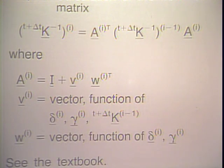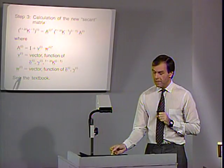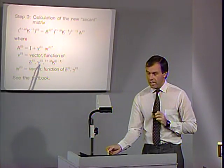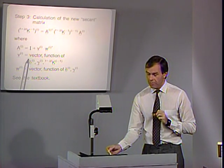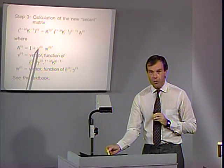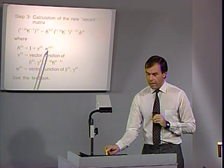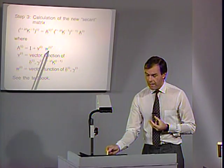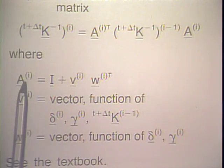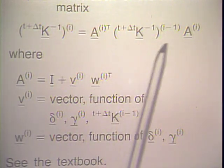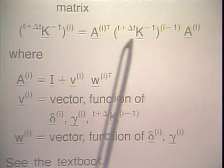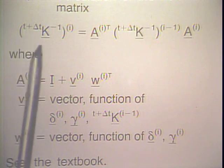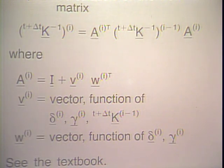Having calculated t+delta_t u_i and the corresponding t+delta_t F_i, we can calculate delta_i and gamma_i and apply the BFGS method. Step 3 is calculation of the new secant matrix: K^{-1} of iteration i equals A_i^T times K^{-1} of iteration i-1 times A_i. The A matrix is obtained with V_i and w_i^T as shown, where V_i and w_i are given as a function of delta_i, gamma_i, and K_{i-1}. You should look at the textbook to see the details of evaluating V_i and w_i.